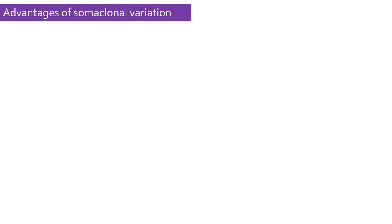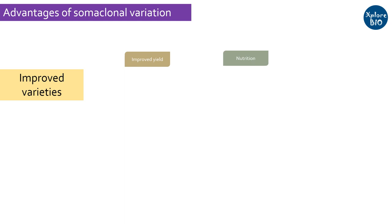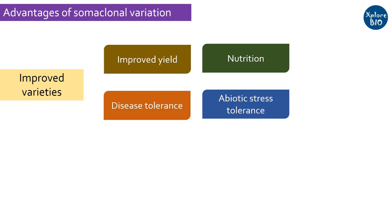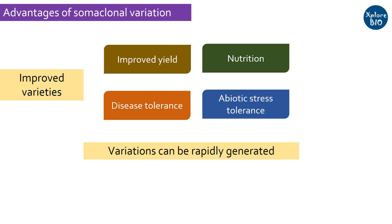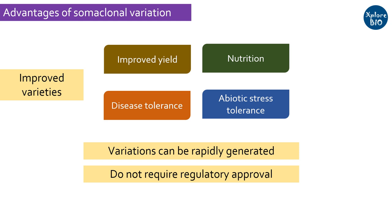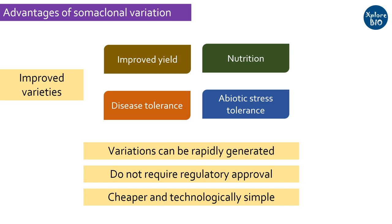On the positive side, somaclonal variation may promote the production of novel horticulture crops with improved characteristics such as improved yield, nutritional quality, disease tolerance, and adaptation to abiotic stresses. These variations can be rapidly produced in plants that propagate sexually and even asexually. Unlike genetic engineering or gene editing, somaclonal variations are induced without inserting DNA from an external source. Therefore, varieties developed through somaclonal variation do not require regulatory approvals essential for genetically modified crops, and their production is much cheaper and technologically less complex compared to gene cloning and genetic engineering.